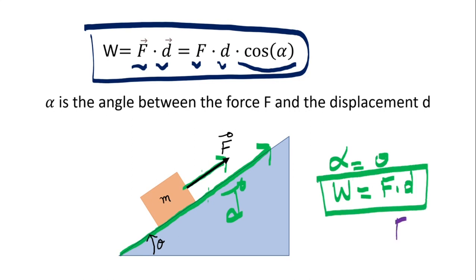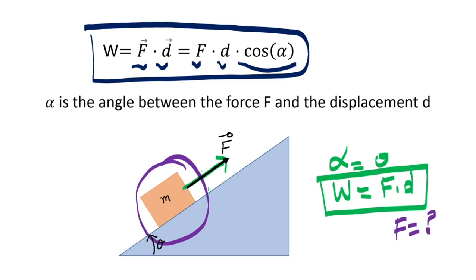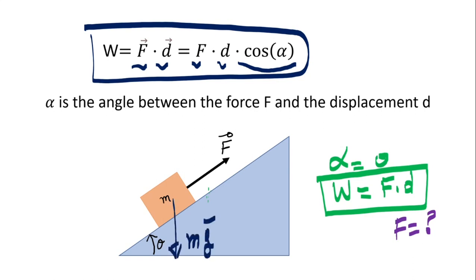To find F, we need the free body diagram — we need to see what pushes and what pulls on this object M. Circle the object and look at what pulls and what pushes on it. We have force F, we have Mg which by definition is perpendicular to the ground, and we have the normal force, which is the force from the surface on the object and is perpendicular to the surface. So we have three forces: F, N, and Mg.